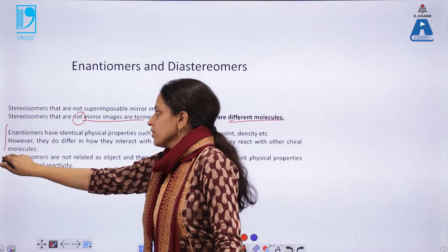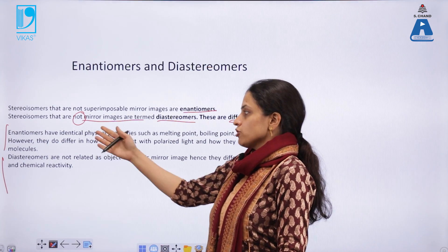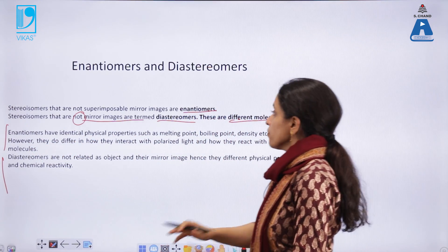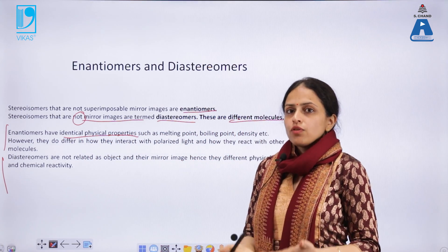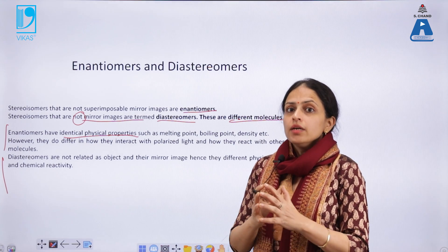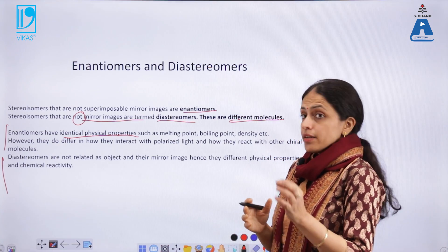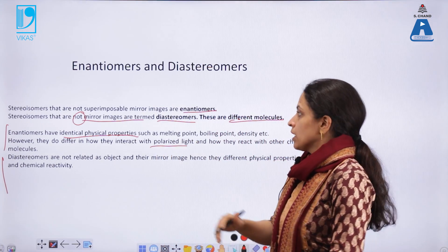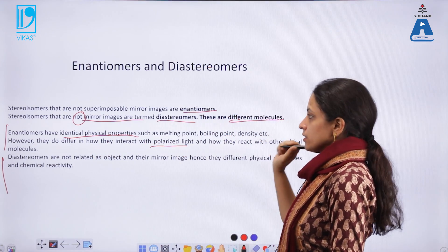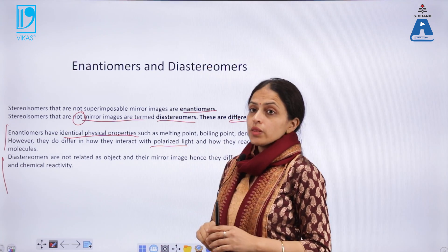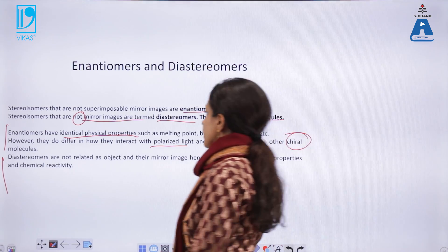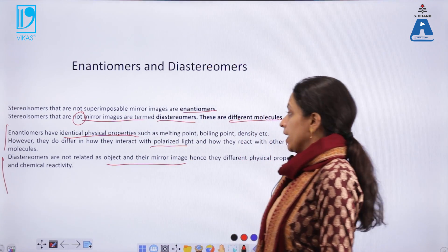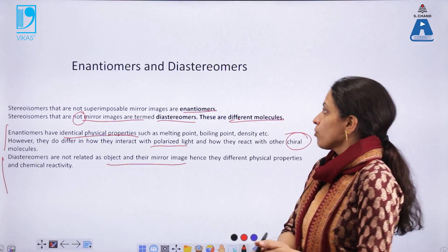Chemically and physically, enantiomers have identical physical properties — similar molecular formula, similar structural formula — even though they are oriented differently in space. They differ only in properties related to polarization. Enantiomers have identical physical properties such as melting point, boiling point, and density, but they differ in how they interact with polarized light and with other optically reactive reagents. Diastereomers, however, are not related as an object and its mirror image, so they are different molecules with different physical and chemical properties.